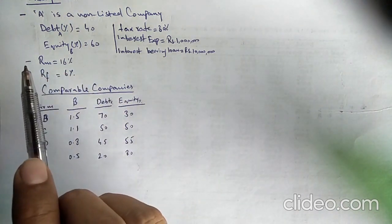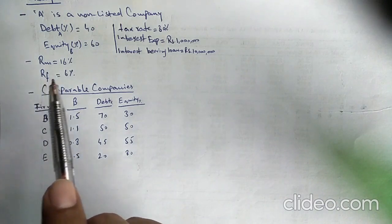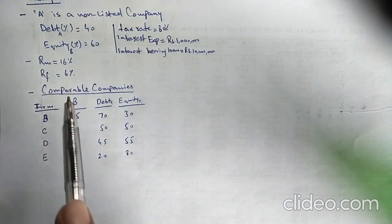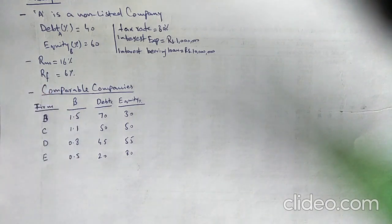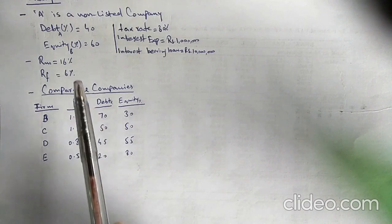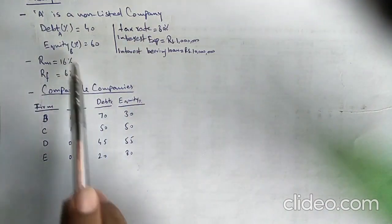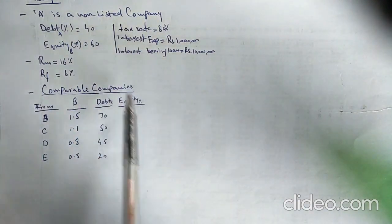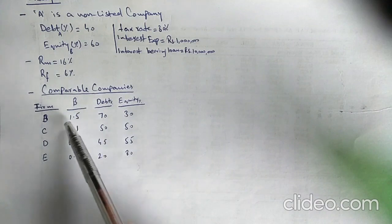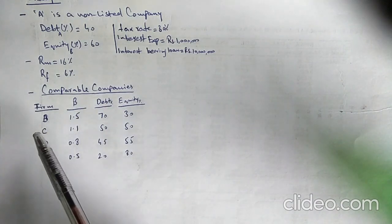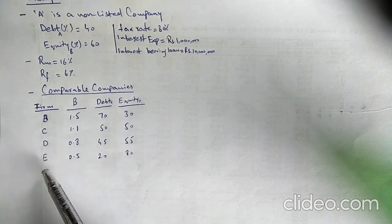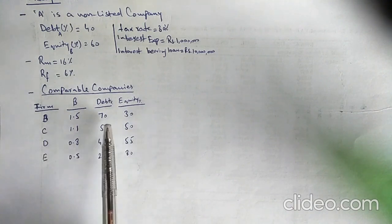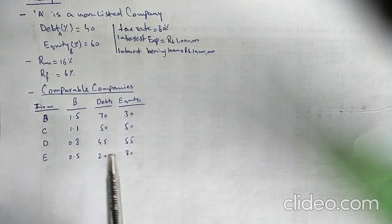RM is the market return which is 16%, and RF is 6%, which is the T-bill rate of the country. To calculate WACC for non-listed companies, we need comparable data. Since A company is non-listed, we take data from comparable listed companies — B, C, D, and E — with their respective betas, debt and equity ratios taken from their financial statements.